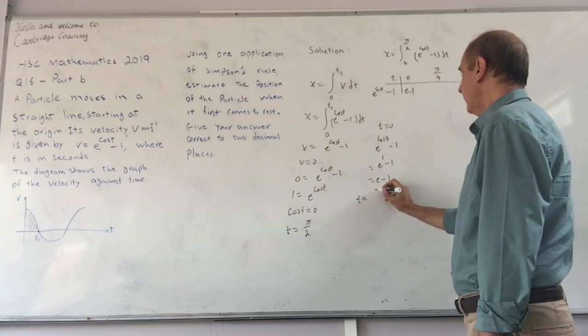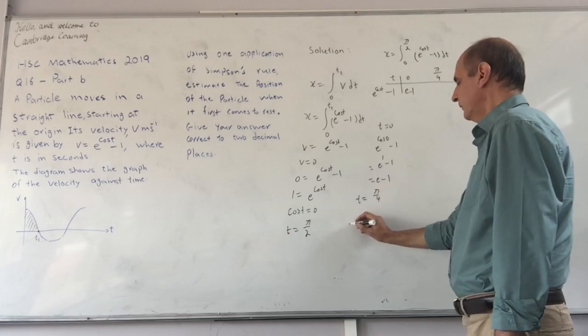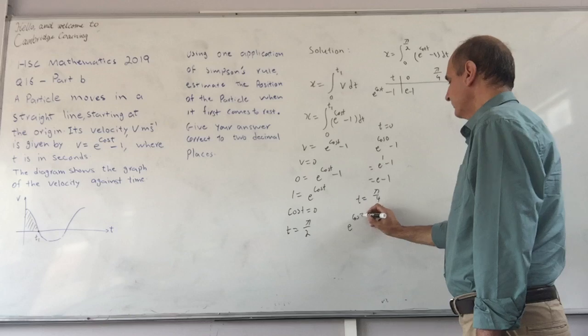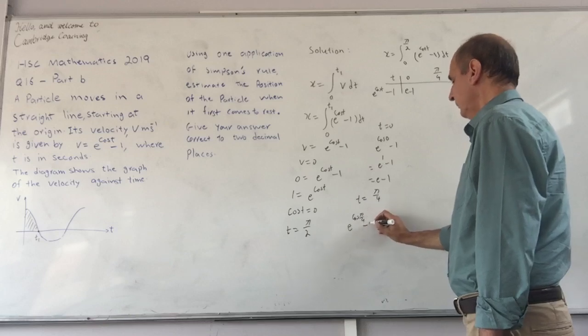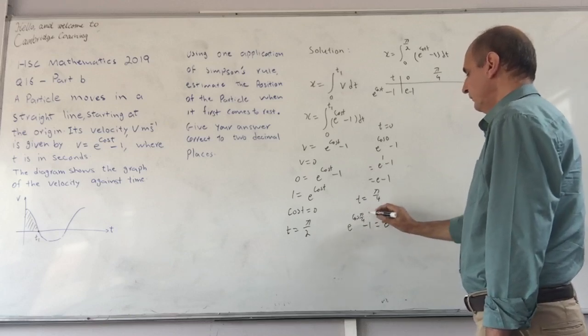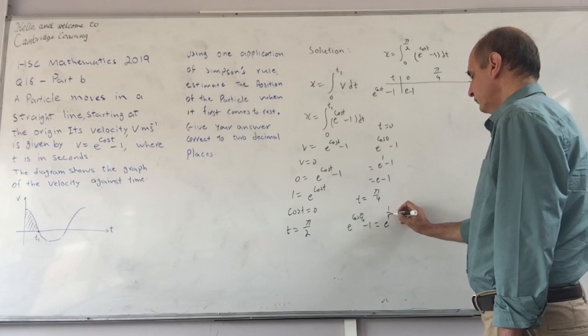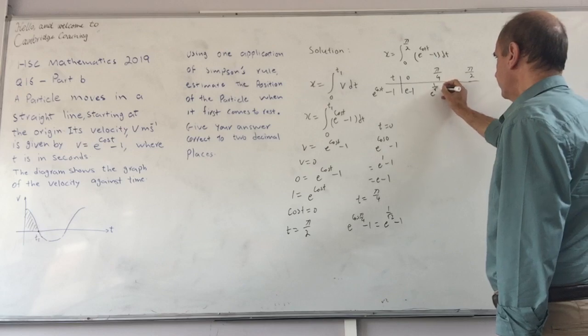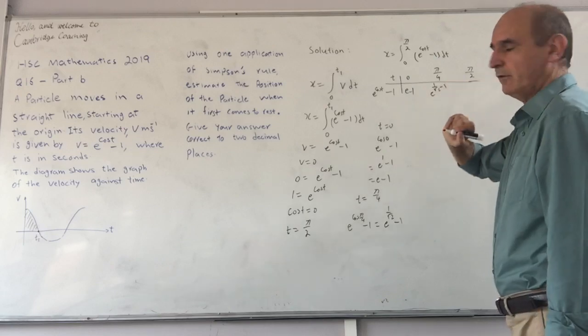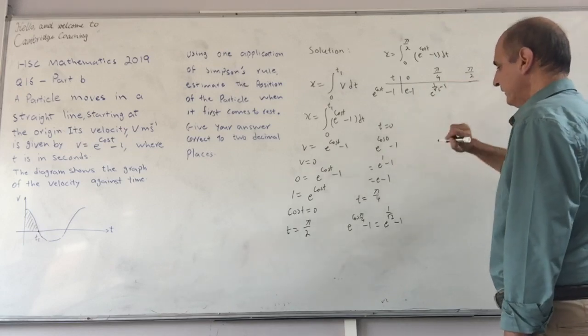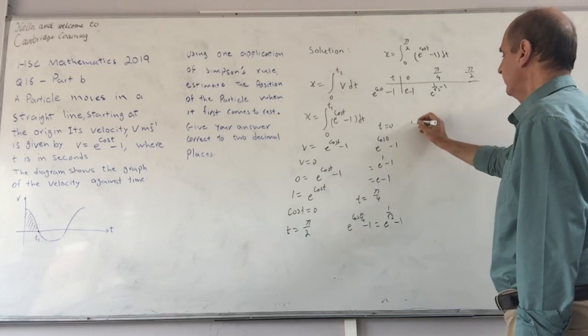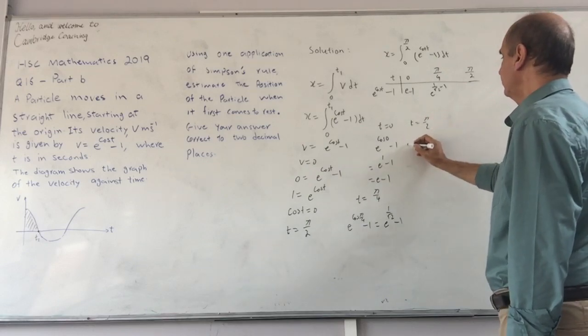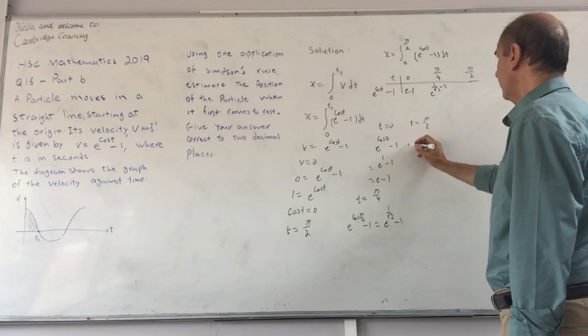When t is π/4, my function is e to the power of cos π/4 minus 1. That is e to the power of 1 over root 2 minus 1, since cos π/4 equals 1 over root 2.